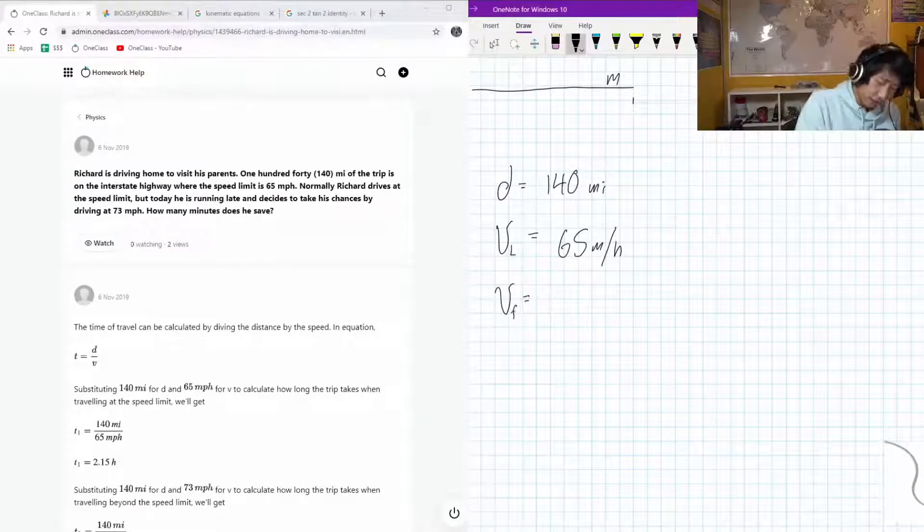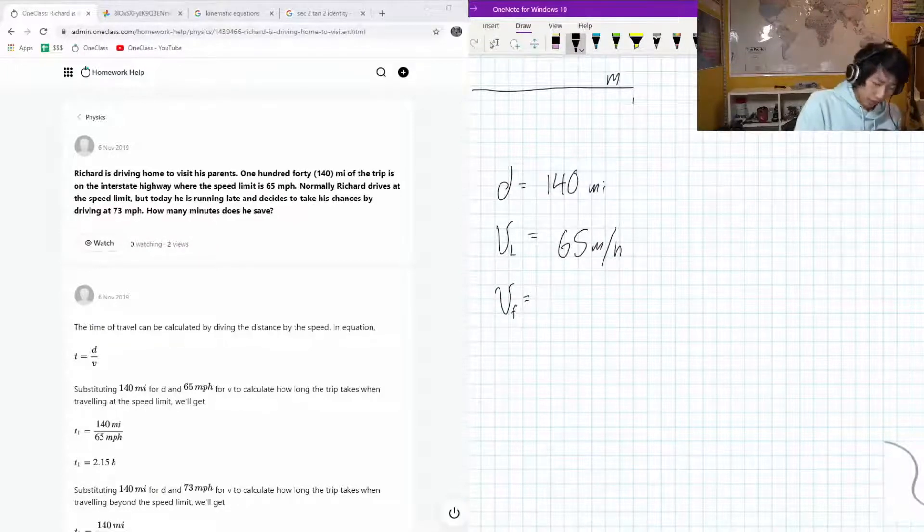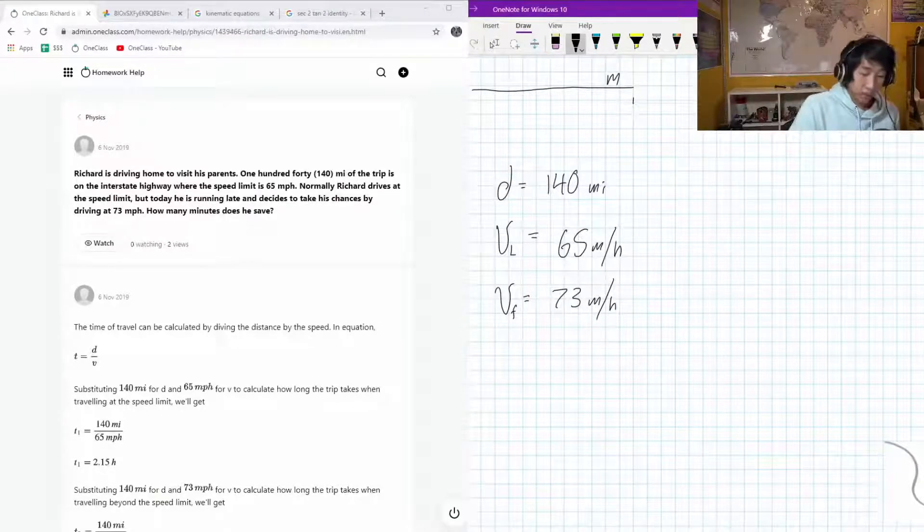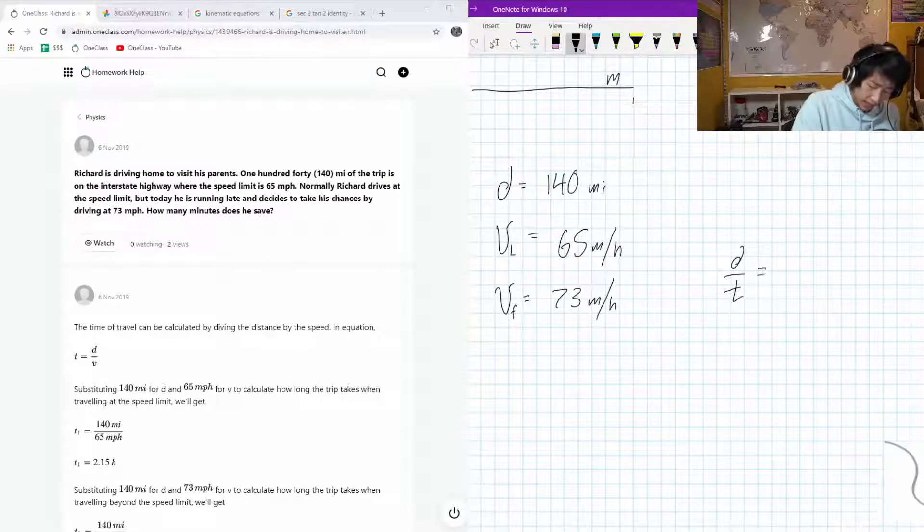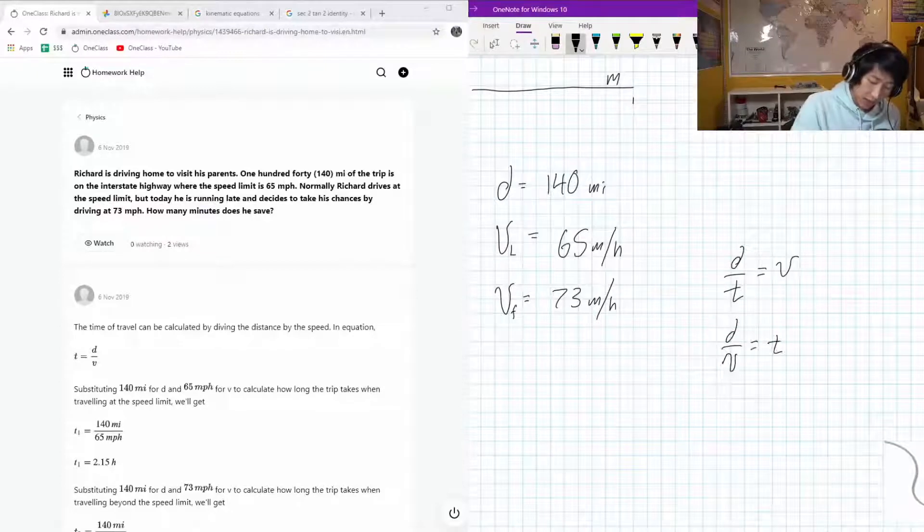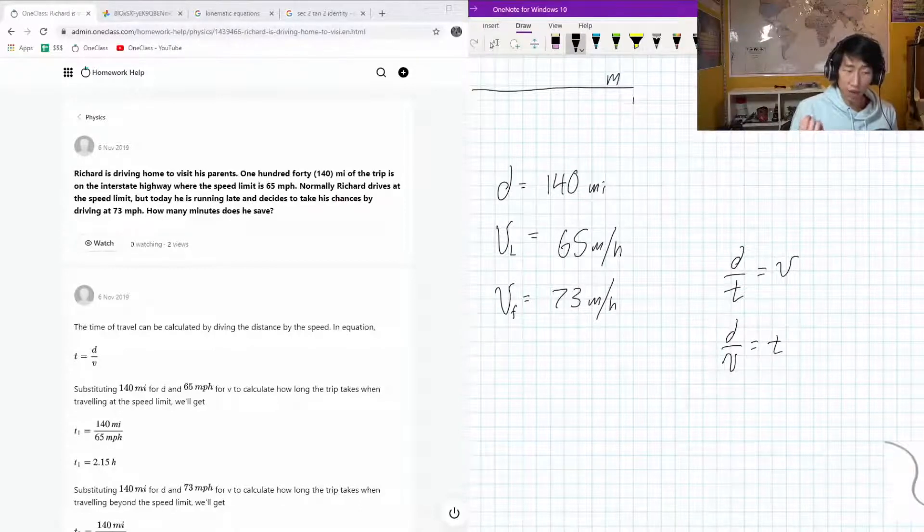And then the V_F for V fast is going to be 73 miles per hour. What we know here is that distance over time equals velocity, right? We're trying to find time, so it's just going to be distance over velocity equals time.